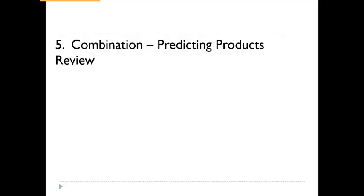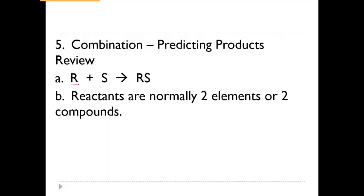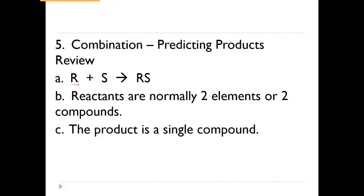A quick review of combination reactions: in general form, A + B → AB. The reactants are normally two elements or two compounds, and the product is always one single compound. We take two reactants — two compounds or two single elements — and react them together to get one single product compound.